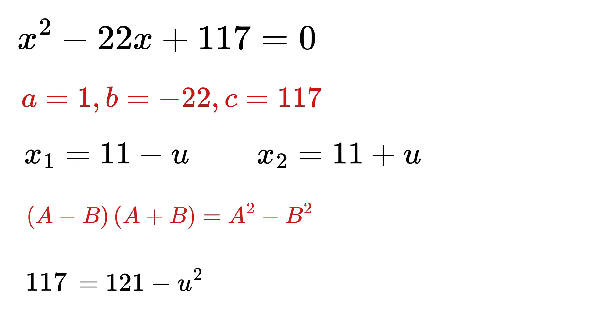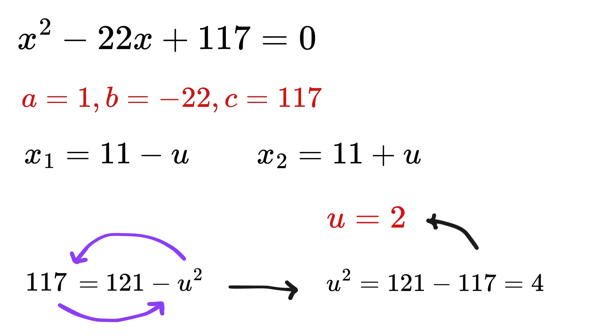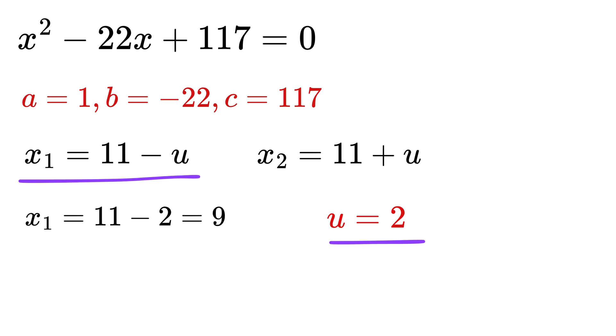and this equals 117. Take U square right side, and this value on left to make it U square equals 121 minus 117, or 4. This gives U equals 2. Therefore, X equals 11 minus 2, or 9, and 11 plus 2, or 13, and that's it.